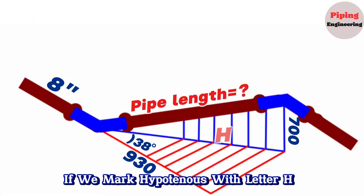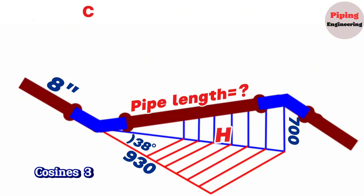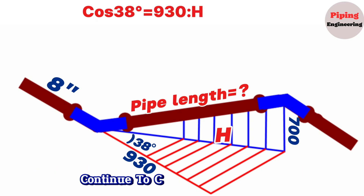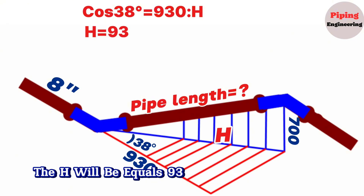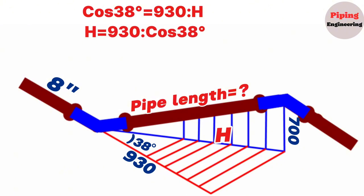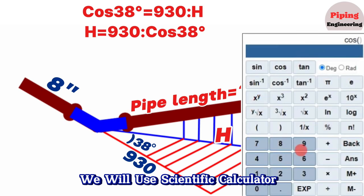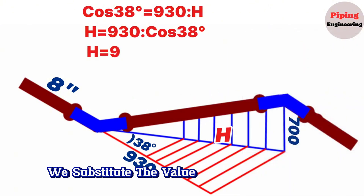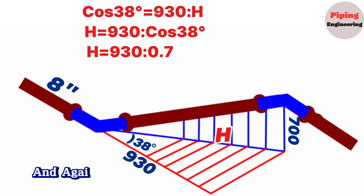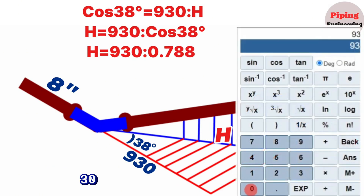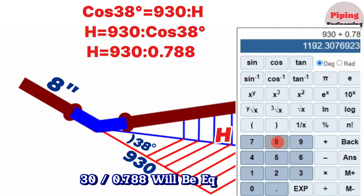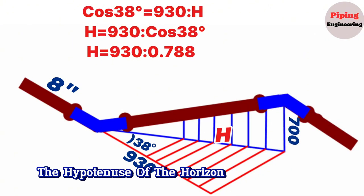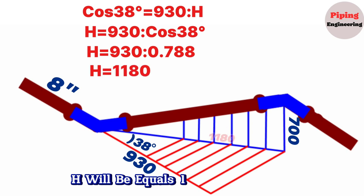If we mark the hypotenuse with letter H, according to the trigonometric function, cosine 38° equals 930 divided by H. Continued to calculate, H equals 930 divided by cosine 38°. Using a scientific calculator, cosine 38° equals 0.788. Substituting into the formula, 930 divided by 0.788 equals 1180. So the hypotenuse of the horizontal right-angle triangle, H, equals 1180mm.